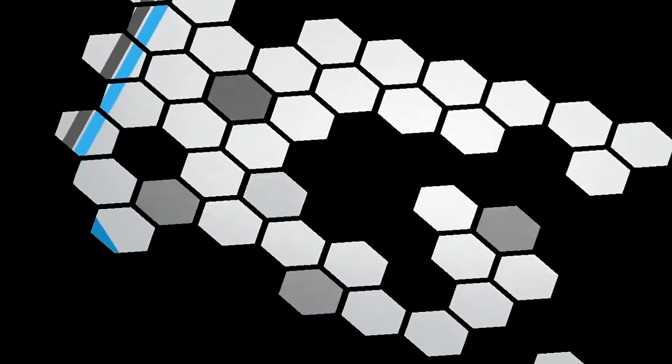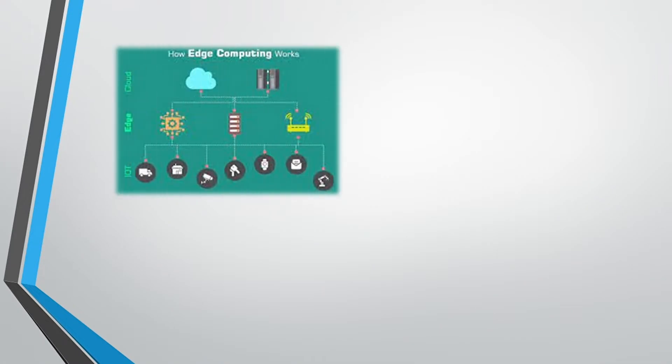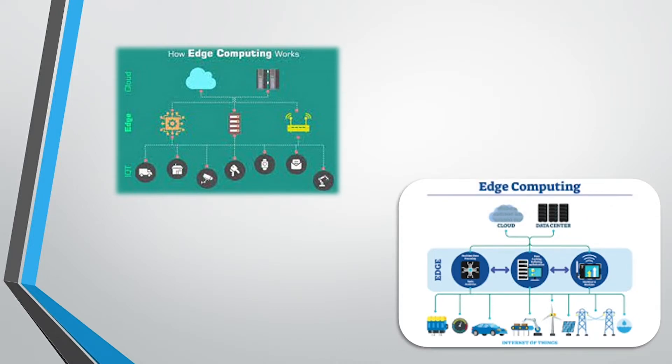So how does edge computing work? Computing is all a matter of location. The physical architecture of the edge can be complicated, but the basic idea is that client devices connect to a nearby edge module for more responsive processing and smoother operation. Terminology varies, so you will hear the modules called edge gateways or edge servers, among others.